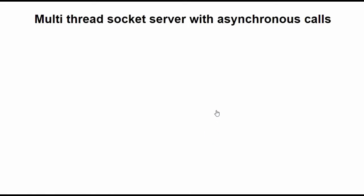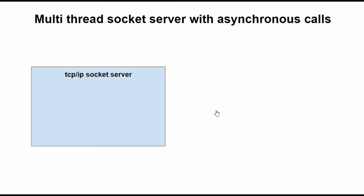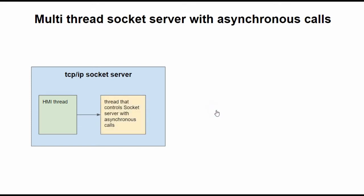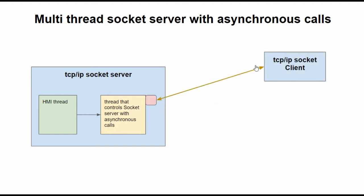I will try to explain my project. It is a client-server application through TCP/IP connection. In the server executable, we have a main thread that controls the user's interactions with the screen and the controls. The main thread creates a secondary thread that controls all the communication section with the client sockets asynchronously.